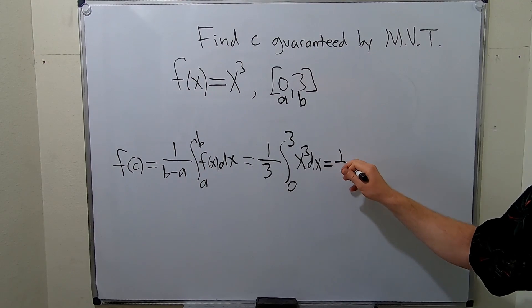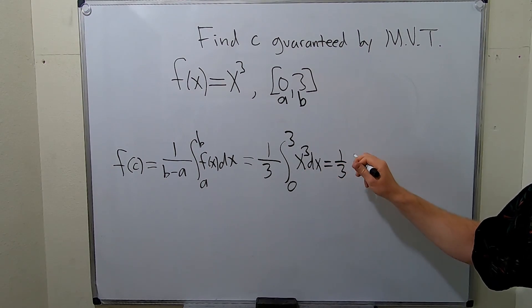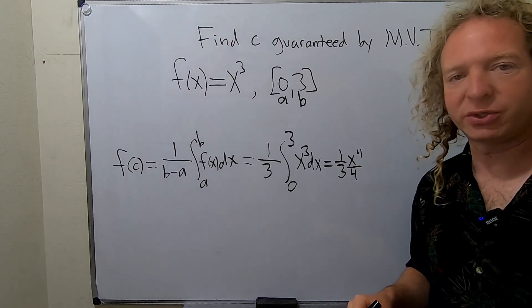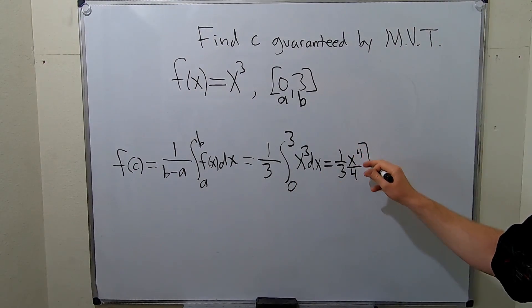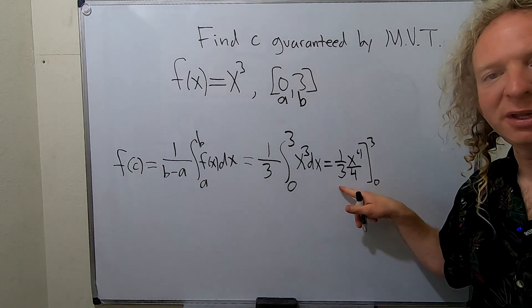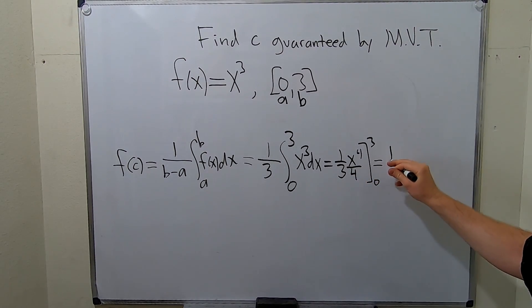So this is one third. So you add one. So you get x to the 4 over 4. That's the power rule for integration. And we're going from 0 to 3. Let's clean this up a little bit. 3 times 4 is 12. So this is 1 over 12, x to the 4, and we're going from 0 to 3.